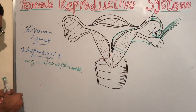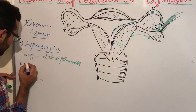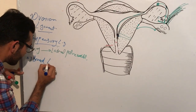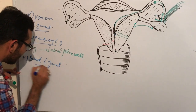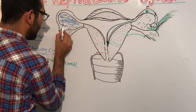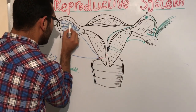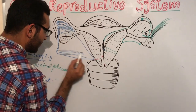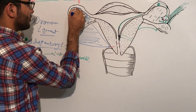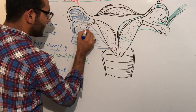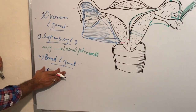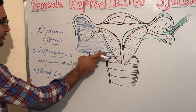The broad ligament is the widest ligament, as you can see here. It provides support to the fallopian tube, the ovary, and the lateral wall of the uterus. This ligament is known as the broad ligament, which provides support to the uterus, ovary, and fallopian tube.